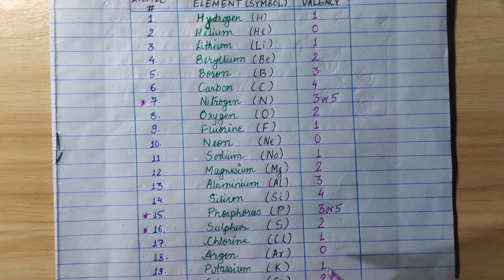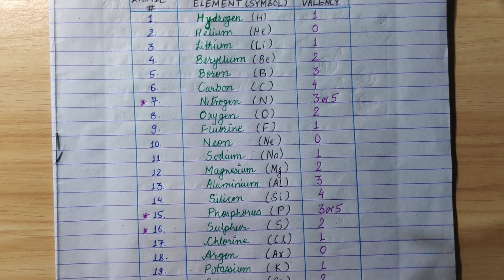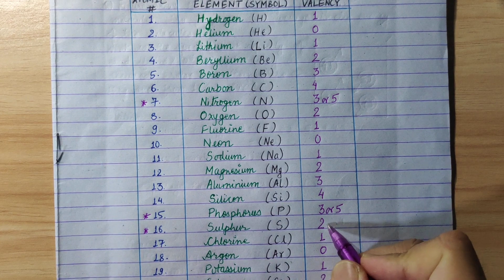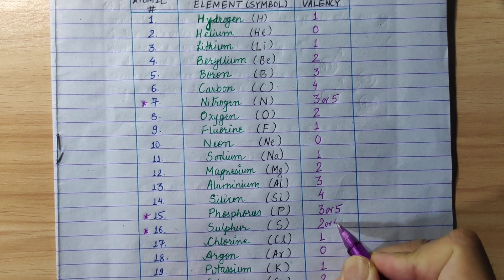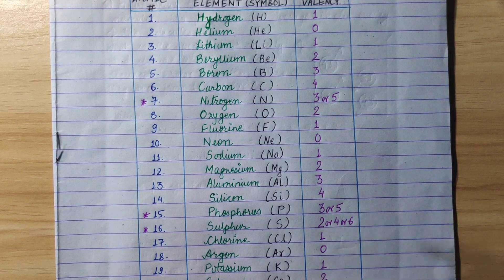The last sulfur, which is important, the valency is 2, 4, or 6.